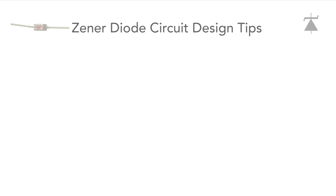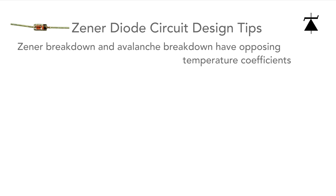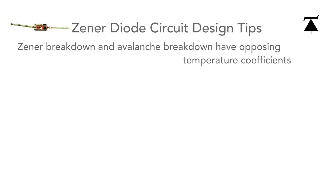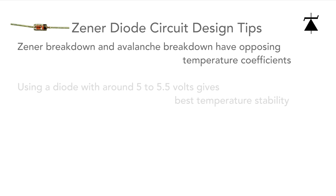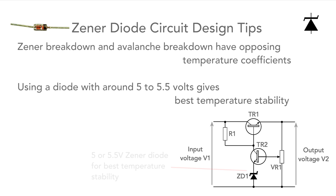Here are a few tips for using these diodes. The first is that the two forms of breakdown have different temperature coefficients that operate in opposite directions. So if we use a diode with a voltage of around 5 or 5.5 volts where both breakdown mechanisms occur, it will vary less with temperature than diodes with other voltages. As many circuits are adjustable, this capability can be used to enable a 5 volt diode to be used in these circuits more easily.